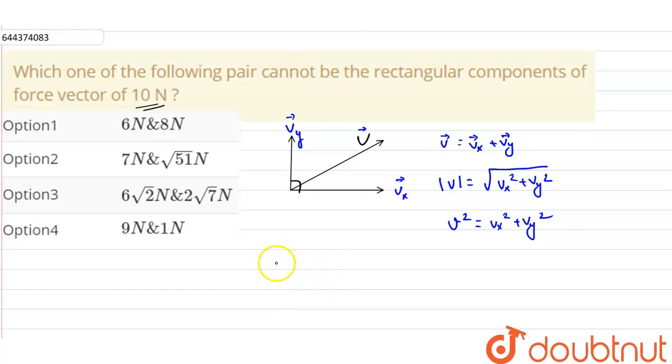So using this, we can say that the rectangular component of the force vector will satisfy the relation fx square plus fy square is equals to 100. From the given options, the option which is satisfying this relation will be the rectangular component of the force vector 10 newton.